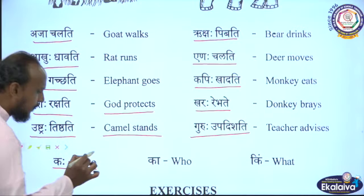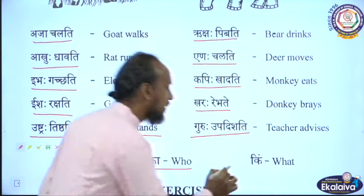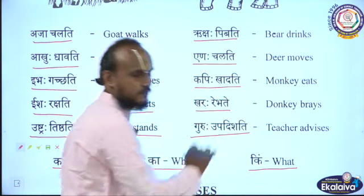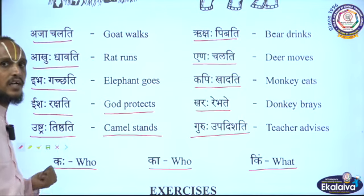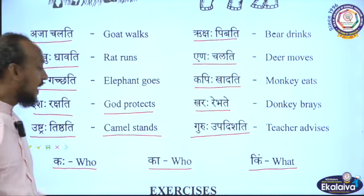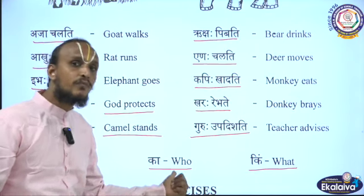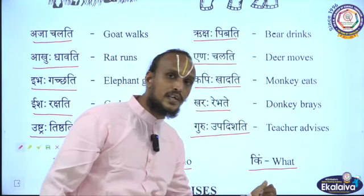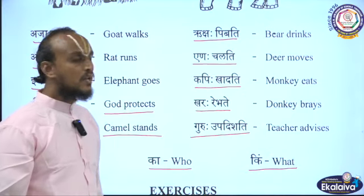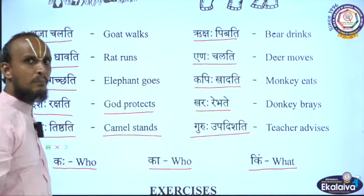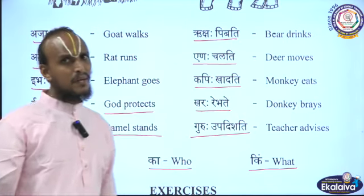Now there are three question words given here: Kaha means 'who' — masculine gender (Pumlingaha). Ka means 'who' — feminine gender (Streelingaha). Kim means 'what' — neuter gender (Napumsakalingaha).